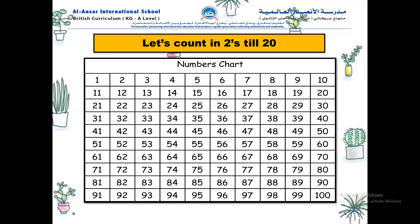Now let's count in twos till 20. Remember, skip one, count one. So: two, four, six, eight — come on, louder — ten, amazing, twelve, fourteen, sixteen, eighteen and twenty. Well done! Big clap hands, amazing job.